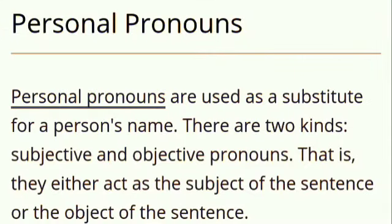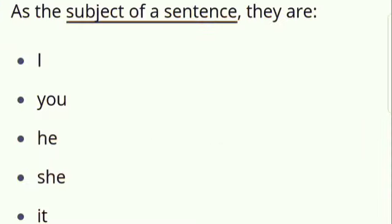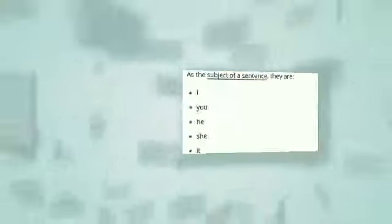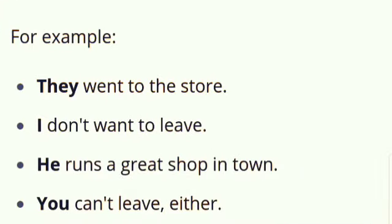Personal pronouns are used as a substitute for a person's name. They are two kinds: subjective and objective pronouns. That is, they either act as a subject of the sentence or the object of the sentence. As the subject of a sentence, they are I, you, he, she, it. For example, they went to the store.